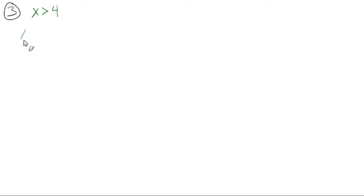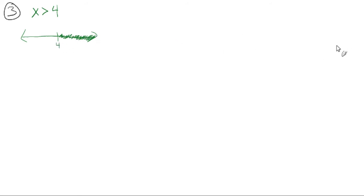For number three: x is greater than four. So we're going to create a number line like we have so many times, and here's four. We know that x is definitely bigger than four. It could be a thousand, a hundred, ten, or five — but could it be four? No. If it's equal to four, then it won't be greater than four. So we use an open circle to signify that x can be all numbers bigger than four, but stop just before you get to four.